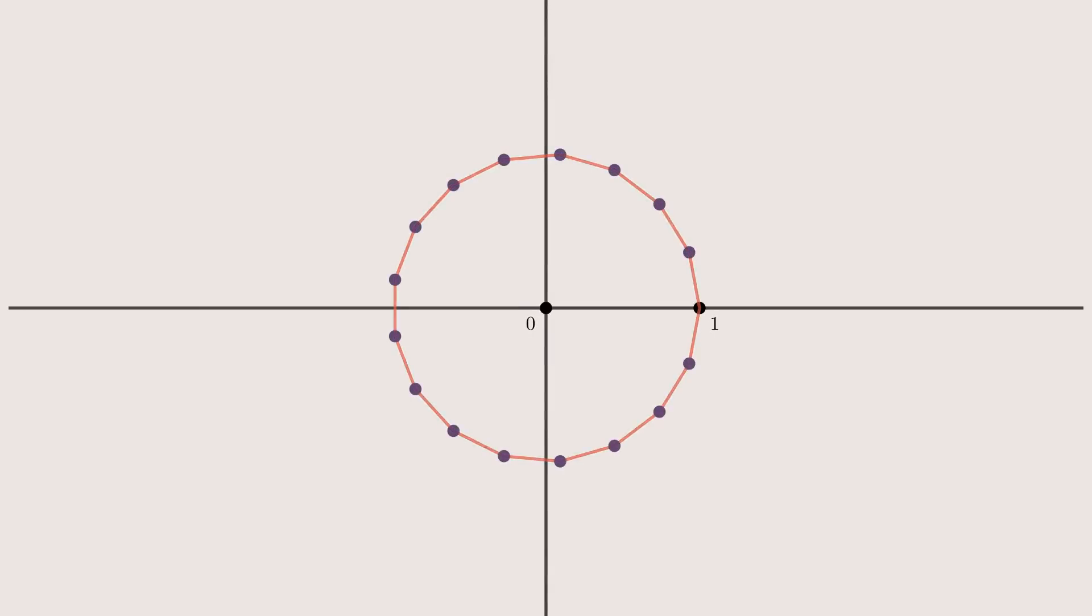But how do you know that the cosine of 2π over 17 is constructible? To show that, we will construct a 17-sided regular polygon around the origin, with the 0 vertex being 1. Now the 17 vertices lie evenly spaced on the unit circle.